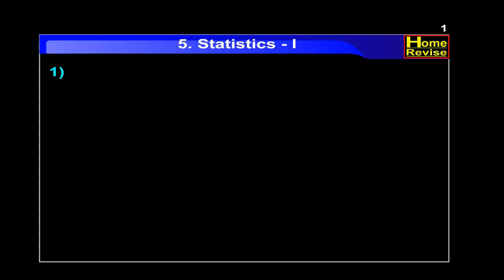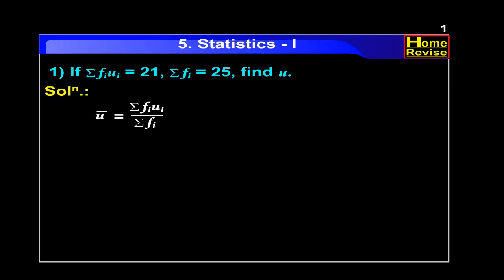Question number 1. If summation FI·UI is equal to 21, summation FI is equal to 25, find U-bar. U-bar equals summation FI·UI upon summation FI, that is 21 upon 25. So U-bar is equal to 0.84.